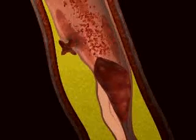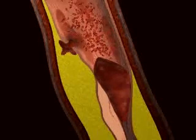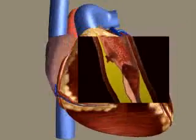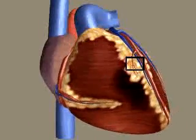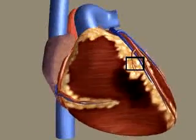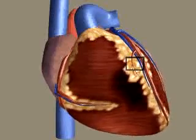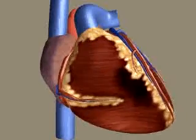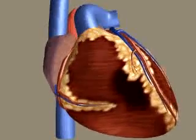Since the supply of blood has been obstructed from reaching the region of the heart supplied by this artery, the myocardial cells become ischemic, resulting in damage to the heart muscle.